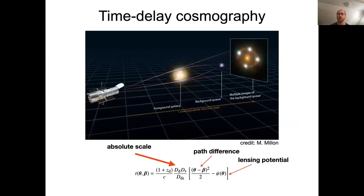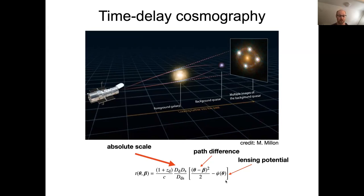So what is time-delayed cosmography? This is a sketch where you see a quadruply-lensed quasar — a four-times imaged background quasar lensed around a foreground massive elliptical galaxy. This lensing effect not only leads to this beautiful distortion, but also to a time delay between the light-traveled paths of the different images. The equation for the predicted time delay involves the geometrical path difference — the Euclidean distance between the two paths with the lensing potential — which can be seen as a diffraction index leading to dilation due to the potential. There is also an absolute scale, which is the important part about how we can use this measurement to infer the Hubble constant.